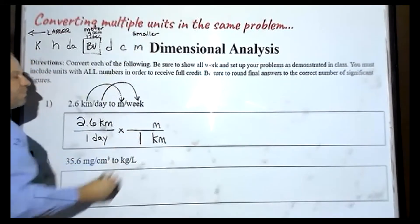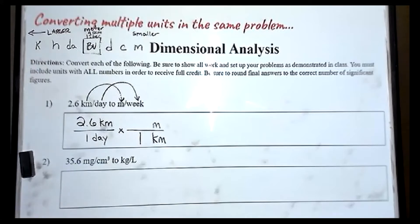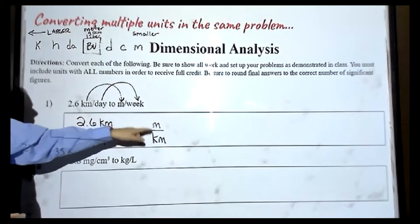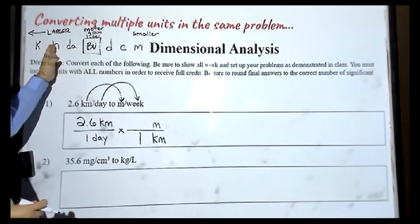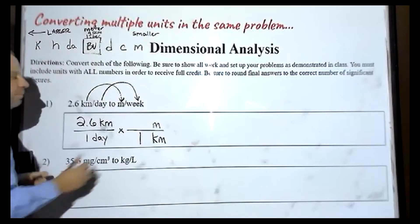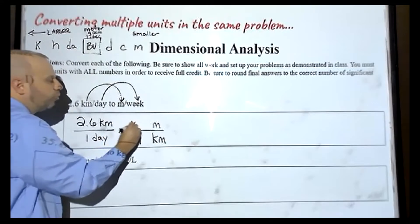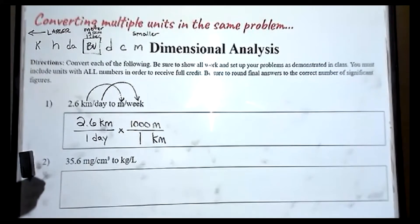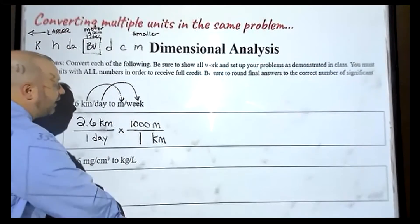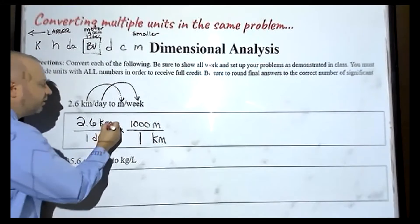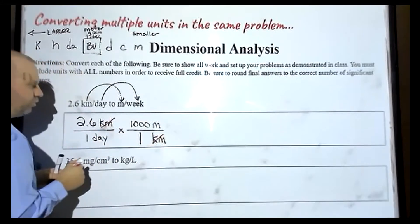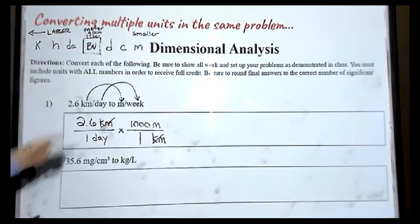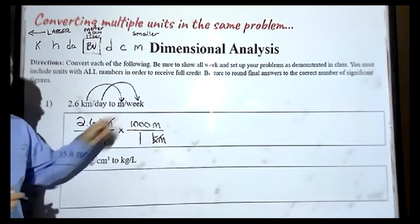The larger one, if you remember, gets a one. Then you figure out how many spaces away it is to get from kilometers to meters — one, two, three spaces. That means we write a one with one, two, three zeros. That's a good first step — that allows me to cancel out my unit of kilometers. So right now, I have units of meters per day, and I'm trying to get to meters per week, so I need to set up another fraction.